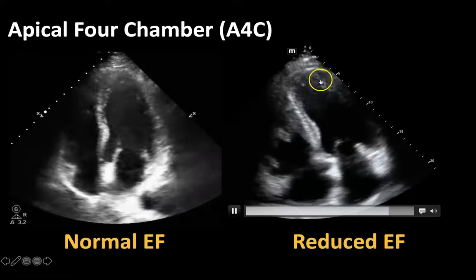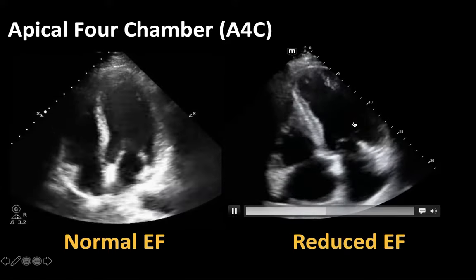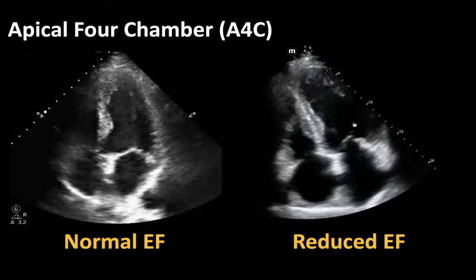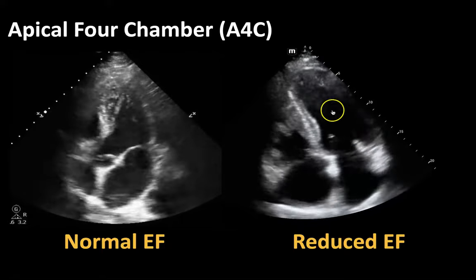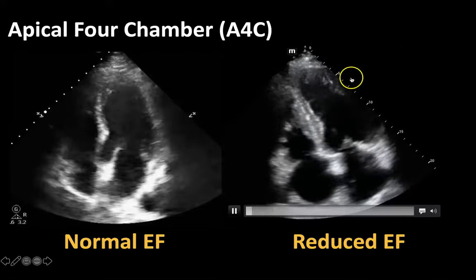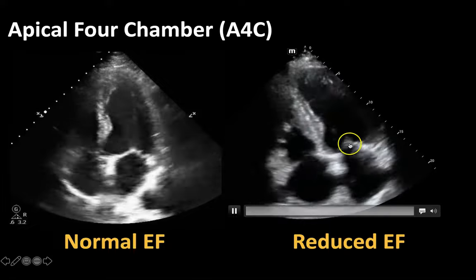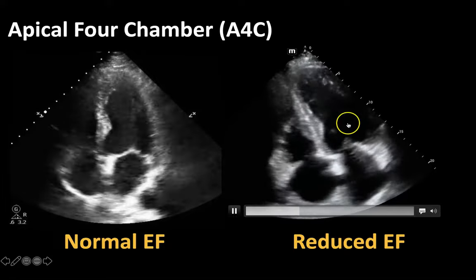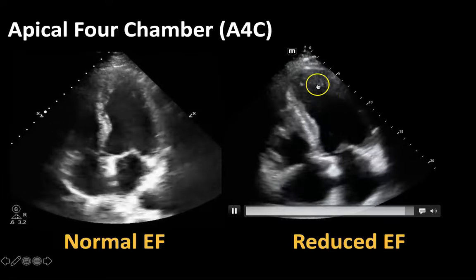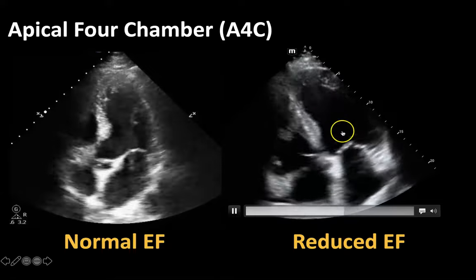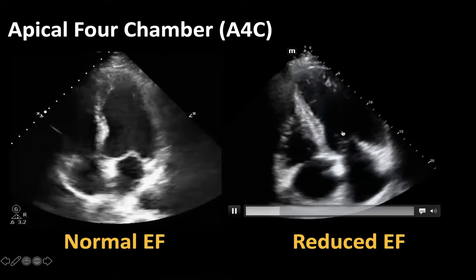As opposed to this heart now on the right side of the screen — same apical four chamber view — this is your left ventricle right here. You're going to imagine that line right in the middle, and you can see that the walls really are not coming close to the center of the ventricle. This is a heart with a reduced ejection fraction.